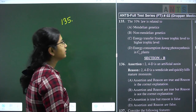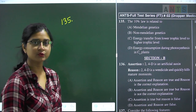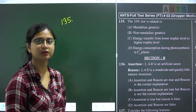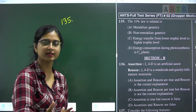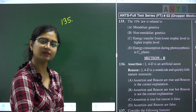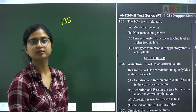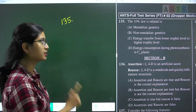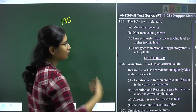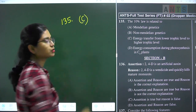Question 135: the 10% law is related to energy transfer. This explains how energy is transferred from one trophic level to the next through a food chain — only 10% of the energy is available for transfer to the next trophic level. The 10% law is related to energy transfer from lower to higher trophic levels. Question 135 answer is option C.